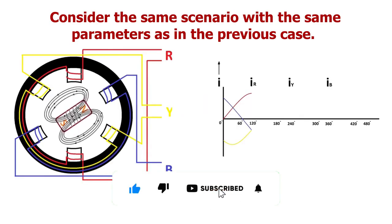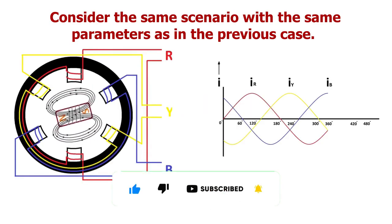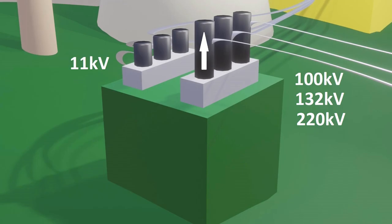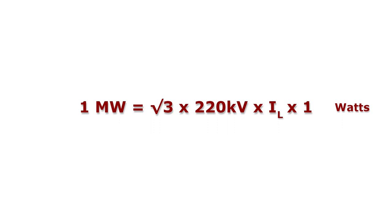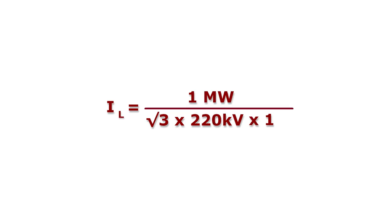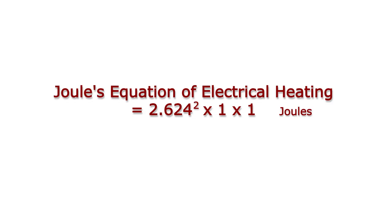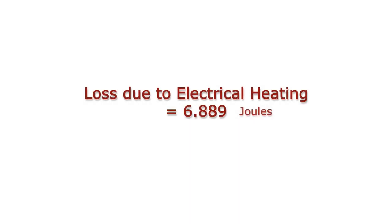Case 2: consider the same scenario with the same parameters as in the previous case. The only difference is that the voltage is stepped up to 220 kV for electricity transmission. Hence, the current flowing through the transmission line to transmit 1 MW of power is 1 MW divided by 220 kV, which equals 2.624 amperes. With resistance R of 1 ohm and time T of 1 second, the loss due to heating equals 2.624² × 1 × 1, which is equal to 6.889 joules.